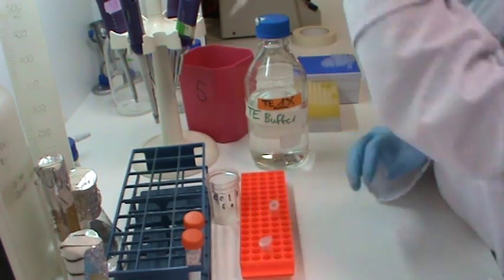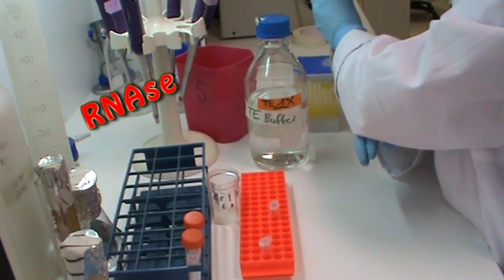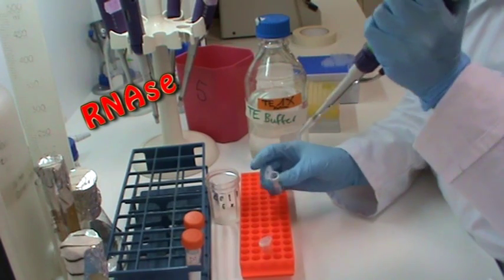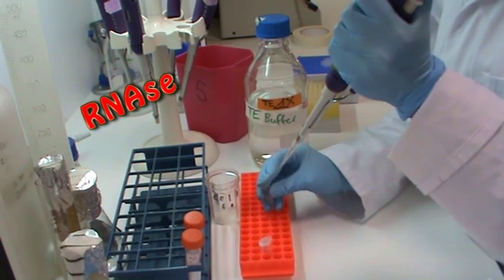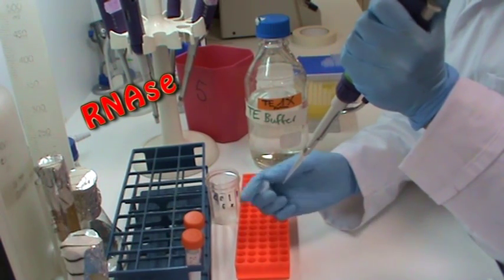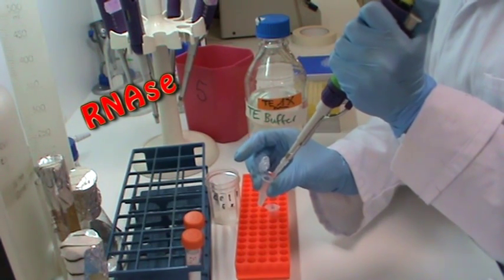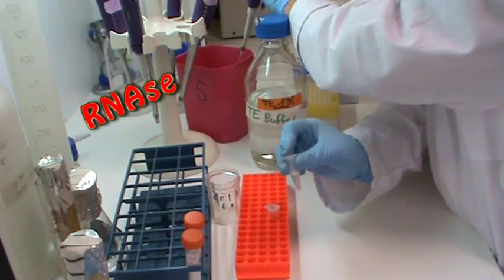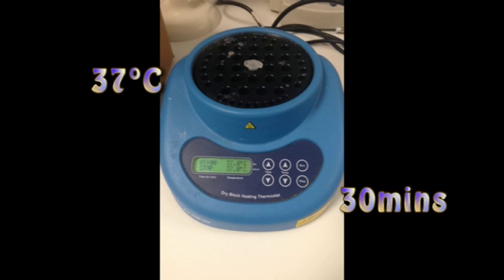Next I am going to add RNase. This is an enzyme. This enzyme cuts any RNA and other types of nucleic acid and ensures a pure extracted DNA. RNase works best at 37 degrees Celsius. I am now going to incubate it at 37 degrees Celsius for 30 minutes.